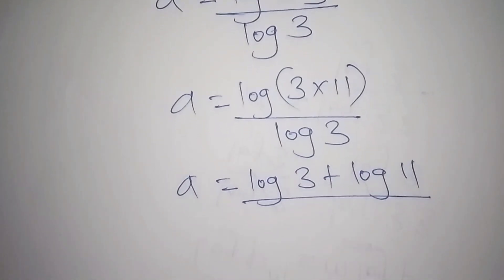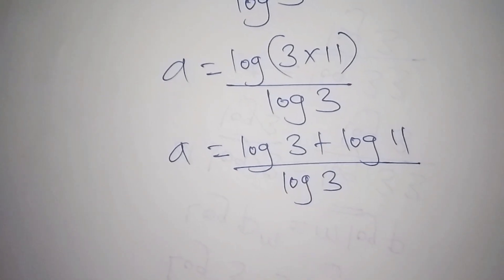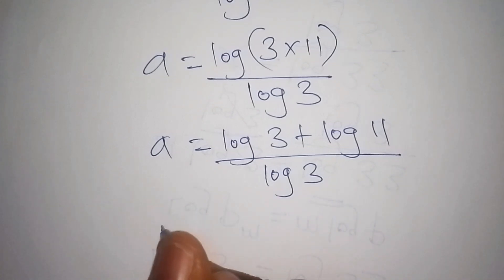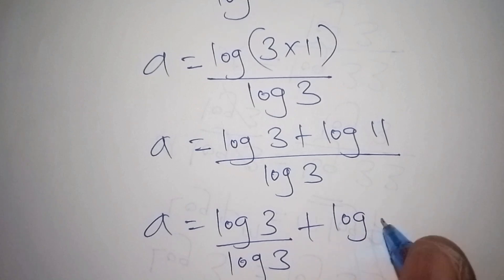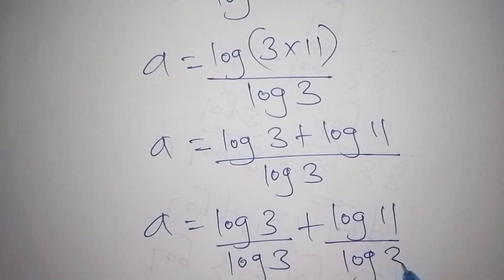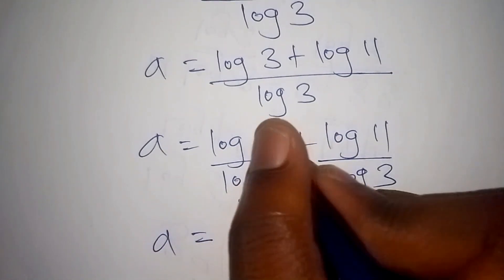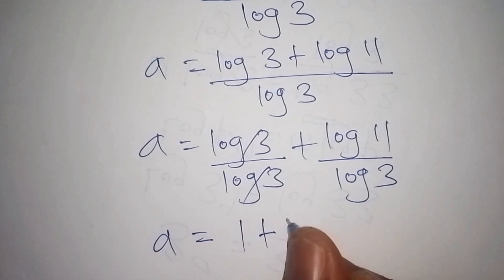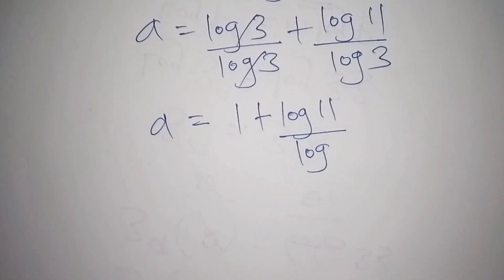We now break the fraction by dividing each term by log3. This gives: a = log3/log3 + log11/log3. Since log3/log3 = 1, we have: a = 1 + log11/log3.